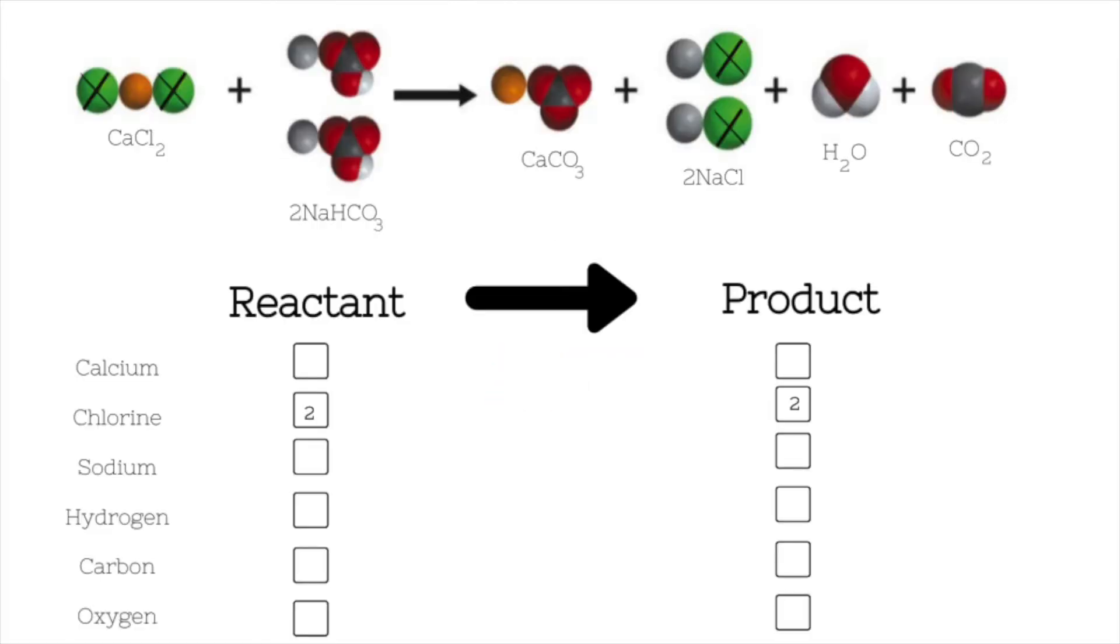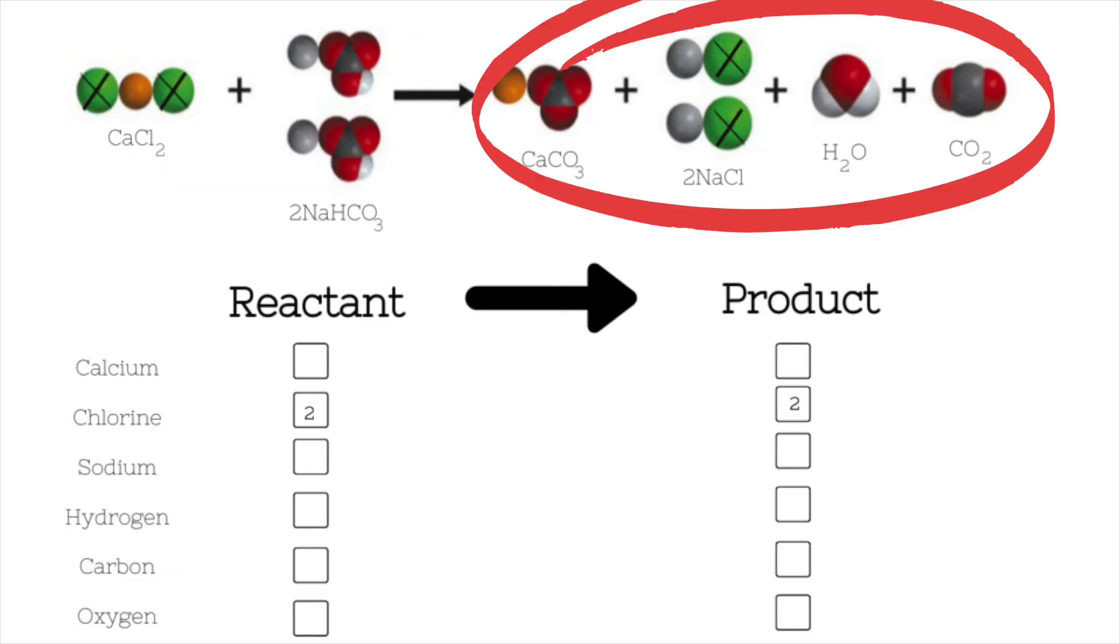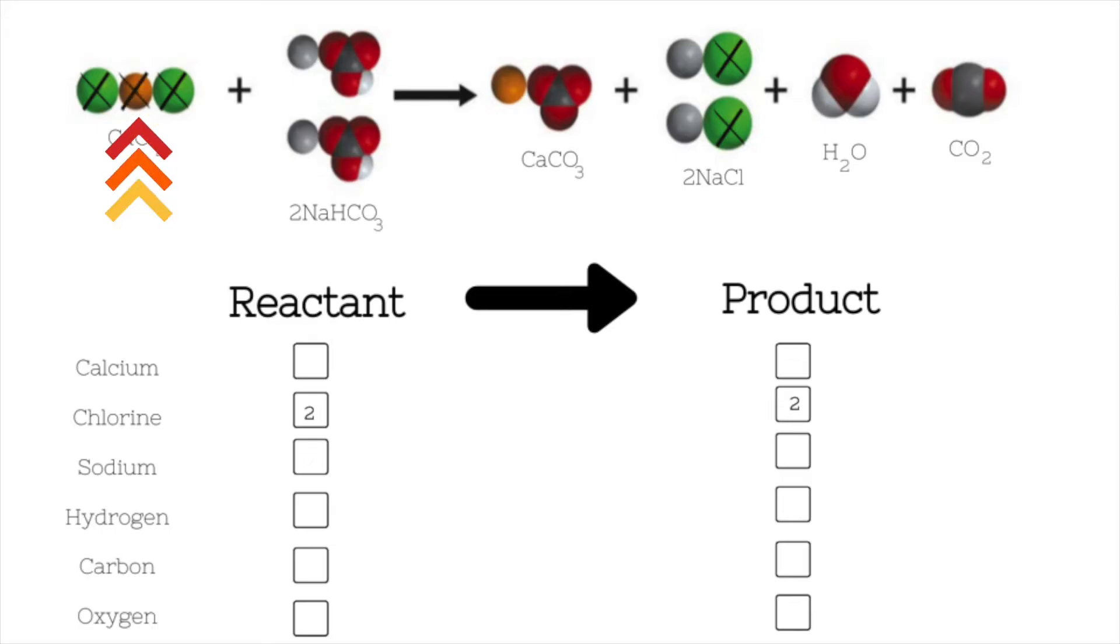And we're going to repeat that process for each element on the reactant side and for each element on the product side of this chemical reaction. Back on the reactant side, I can see that I have one calcium atom. I'm going to cross that off and then I'm going to mark it in my chart. On the product side, I also have one calcium atom, and I'm going to mark that on my chart. The next atoms I'm marking are the two sodium atoms. I'll put a two in my chart, then I'm going to move over to the product to make sure that I also have two sodium atoms on that side. And I'll list them here in my chart.